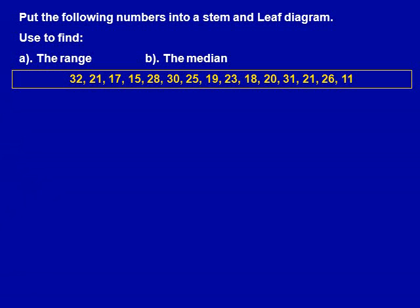Stem and leaf diagram questions come up very early in either the calculator or non-calculator exam papers. These questions are usually worth five marks. Three marks are for completing the question, one mark is for the range, and the other mark is for finding the median.